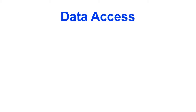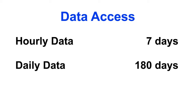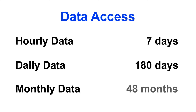In order to reduce the load on our servers, we restrict access to only recent data. For hourly data, you can view up to seven days in the past. For daily data, you can view up to 180 days. And for monthly data, you can view up to 48 months of recent data.